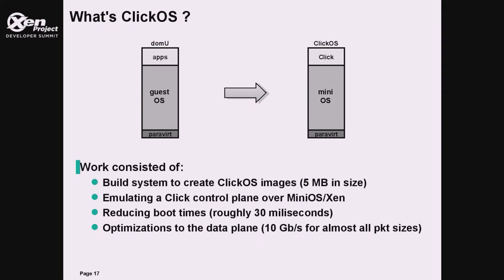The work we did includes many contributions: a generic build system to build these ClickOS virtual machines, which are five megabytes in size. We had to emulate the Click control point from MiniOS, since Click is distributed as a process or kernel module, so the way to communicate with it had to be changed for the VM context. We also did optimizations to reduce boot times, starting from around one second and going down to 30 milliseconds, and optimizations to the data plane to achieve 10 gigabit line rate for almost all packet sizes.